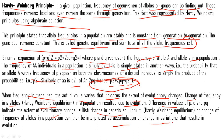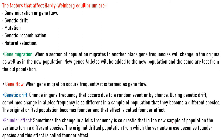The sources of variations that disturb Hardy-Weinberg equilibrium include mutations, pre-adaptive mutations and recombinations, gene flow, founder effect, genetic drift, natural selection, and bottleneck effect. These were discussed briefly in the previous chapter. The factors that affect Hardy-Weinberg equilibrium are: gene migration or gene flow, genetic drift, mutation, genetic recombination, and natural selection.